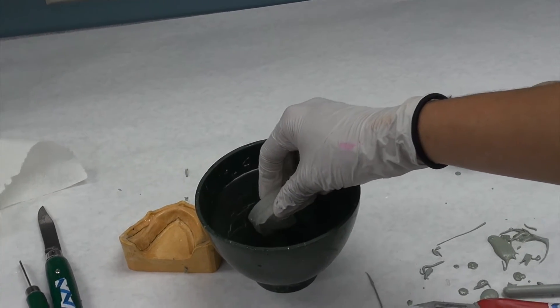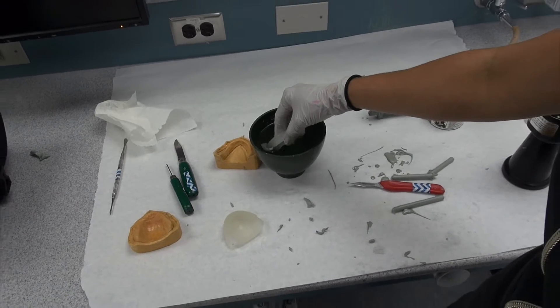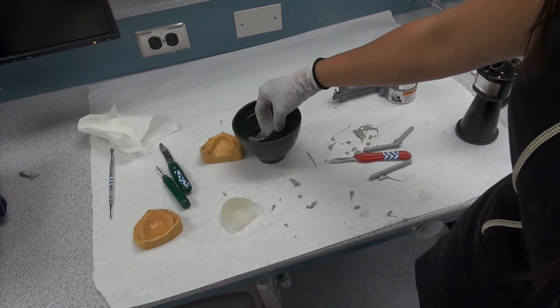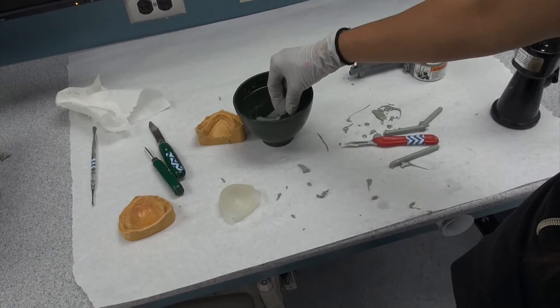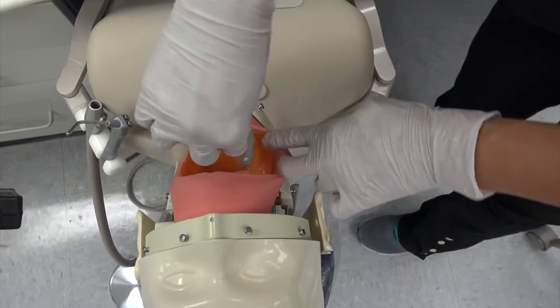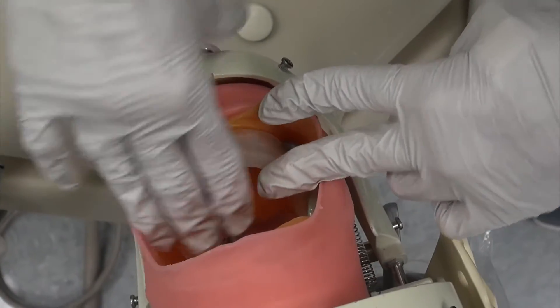Now, you're going to do each side at a time, so you'll start with the distal, you'll move to the distal buckle, you'll move to the labial, and then you'll do the flanges.